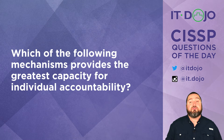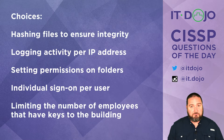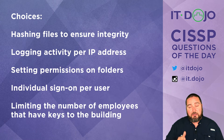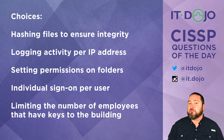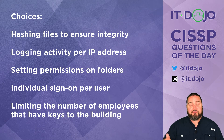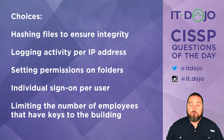Let's move on to question number two. Of the items listed, which provides the greatest capacity for individual accountability? The first item is hashing files to ensure integrity — no. Hashing files does nothing to really help with individual accountability. A file hash using something like SHA-1 shows a mathematical representation of that file at a moment in time. If the file is subsequently modified, the hash will be different, but none of that holds anyone accountable, because anybody can make a change and the hash simply reflects what changed, not who changed it.